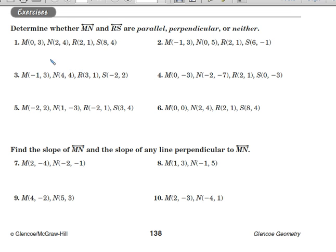For number 1, we need to find the slope between MN and RS. For MN, the slope will be 4 minus 3 over 2 minus 0, which gives us a slope of 1/2. For RS, the slope is 4 minus 1 over 8 minus 2, which gives us 3 over 6. 3 over 6 reduces to 1/2. Looking at these two slopes, we've got 1/2 and 1/2. They're the same slope, which means they are parallel.